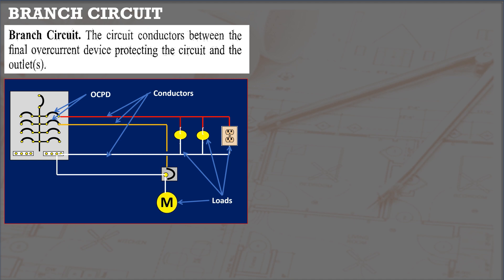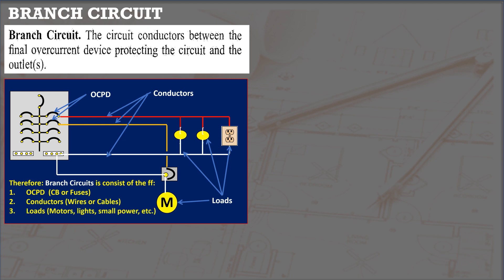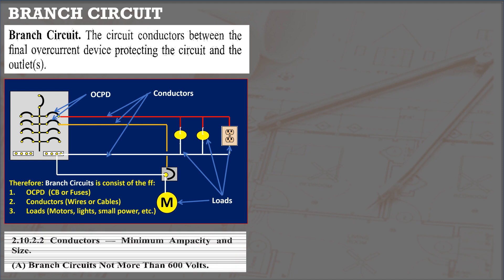Branch circuits consist of the following: overcurrent protective devices (circuit breakers or fuses), conductors (wires or cables), and loads (motors, lights, small power, etc.). This is the last part of the circuit supplying electrical devices.